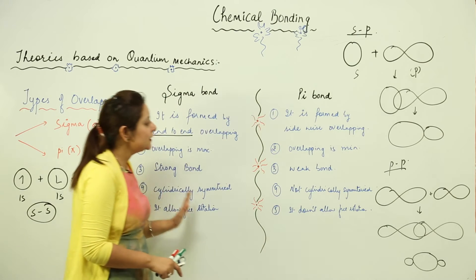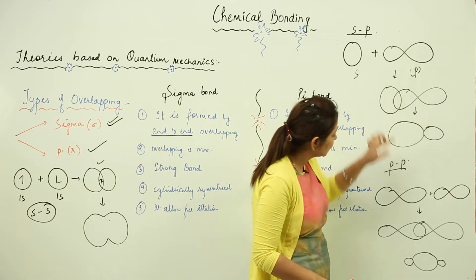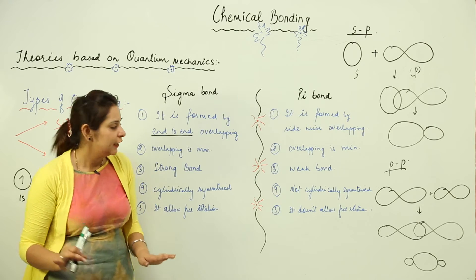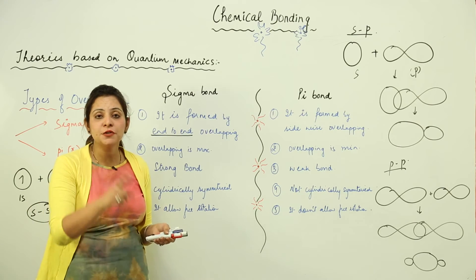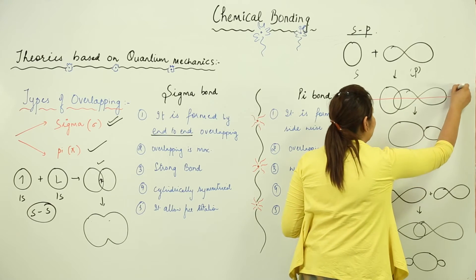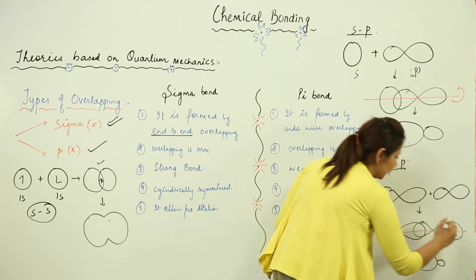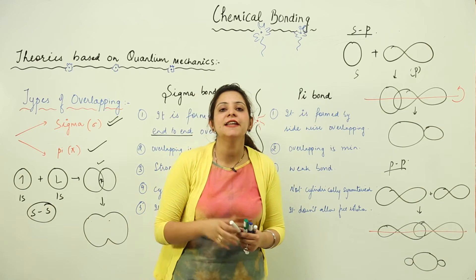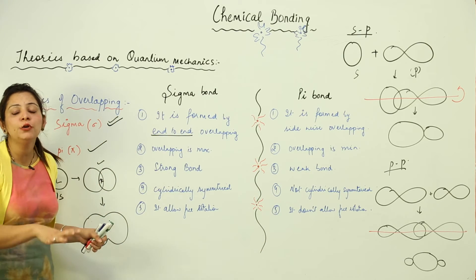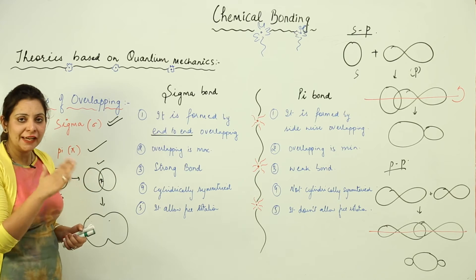In a Sigma bond, the overlapping region is sufficient, indicating the bond strength is adequate. When we draw an axis and rotate the molecule, the whole structure rotates in a similar manner — we say it is cylindrically symmetrical. Because the electron clouds are not separated by anything, free rotation of electrons is possible. This cylindrical symmetry and free rotation are defining features of the Sigma bond.